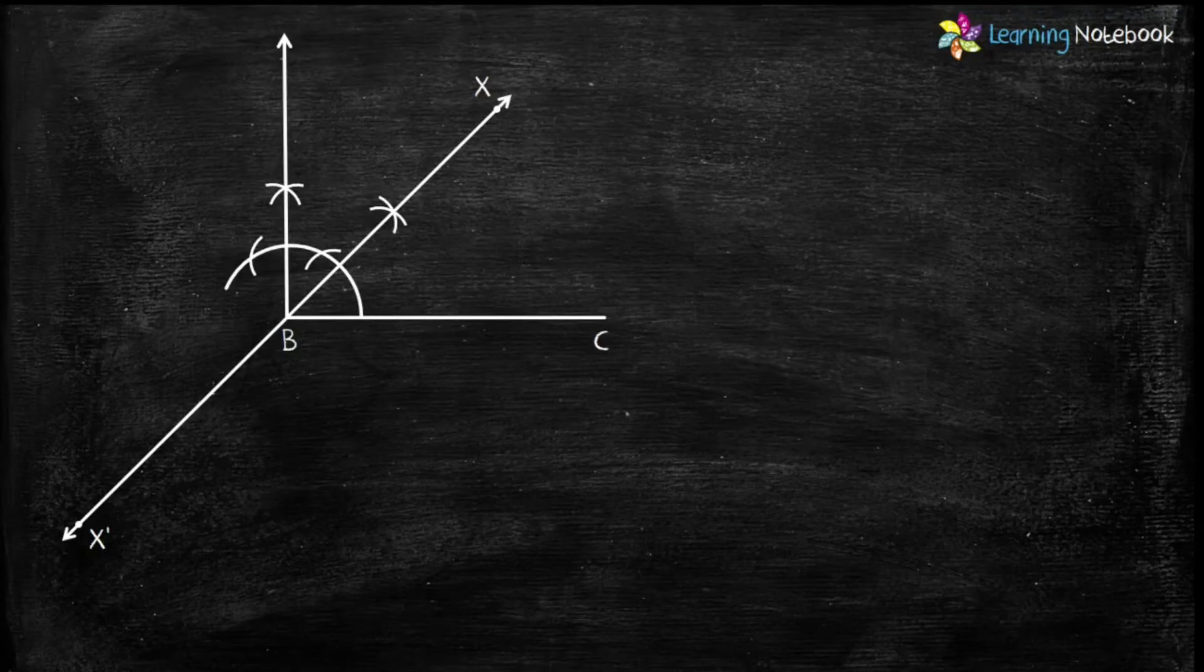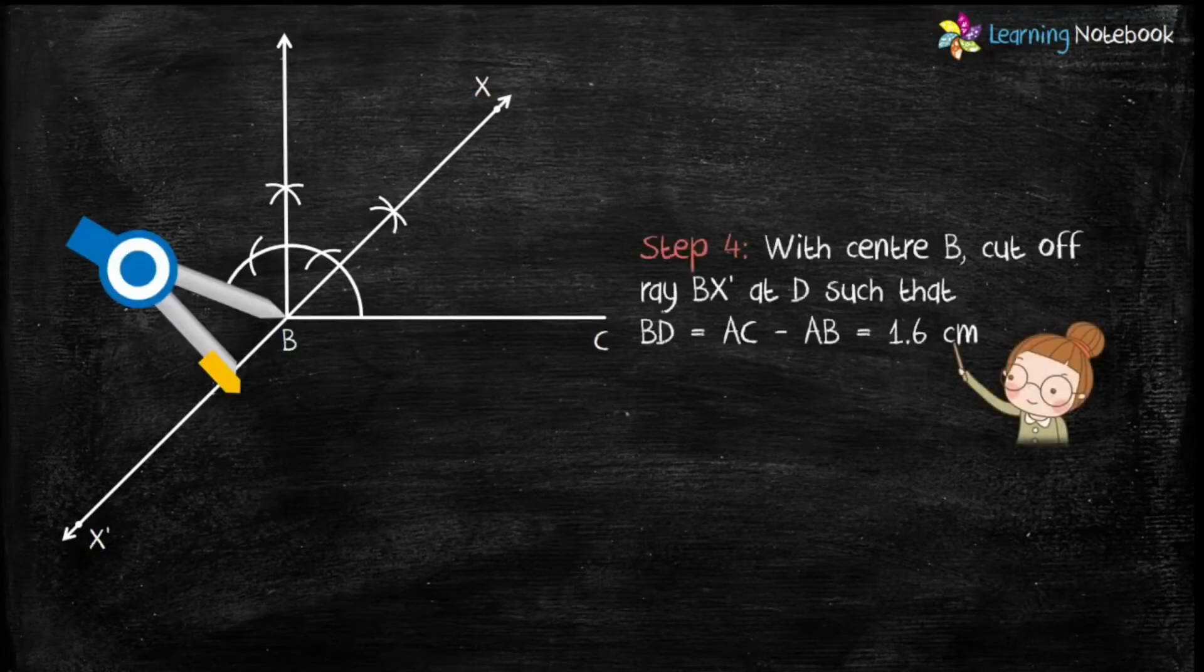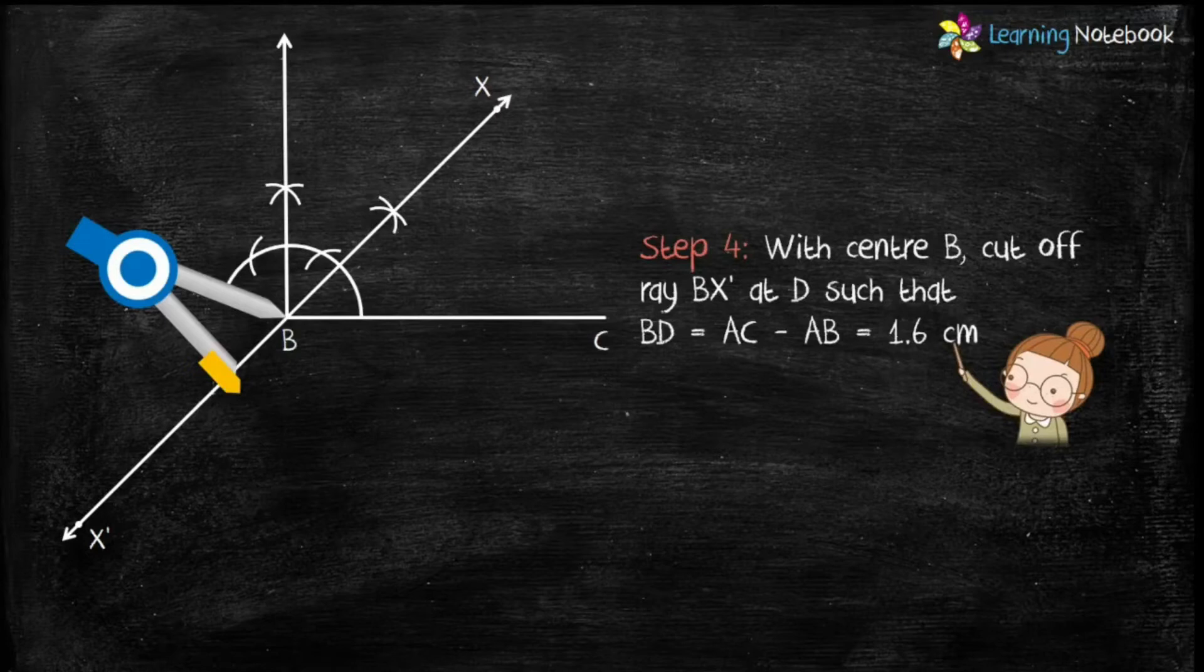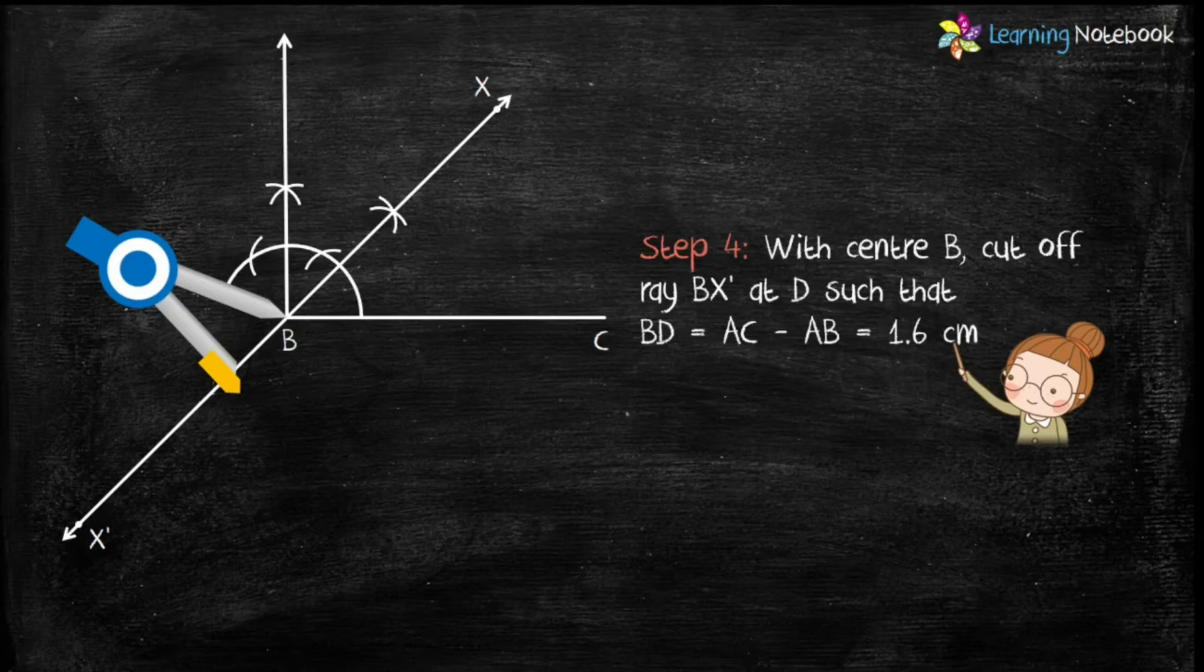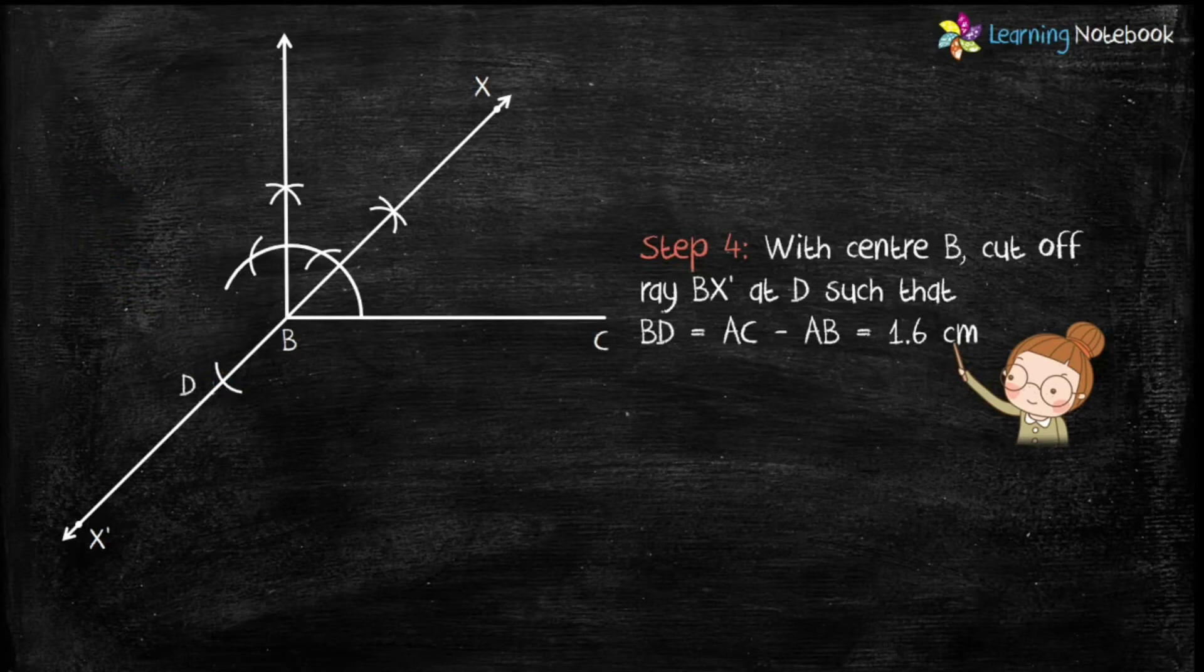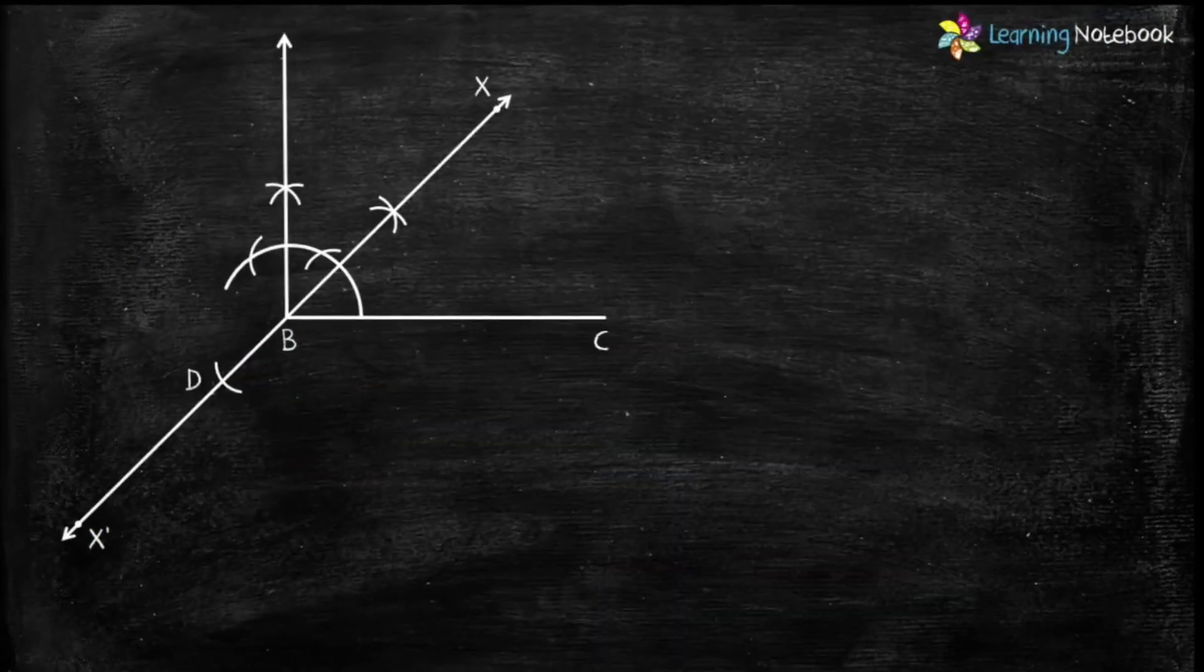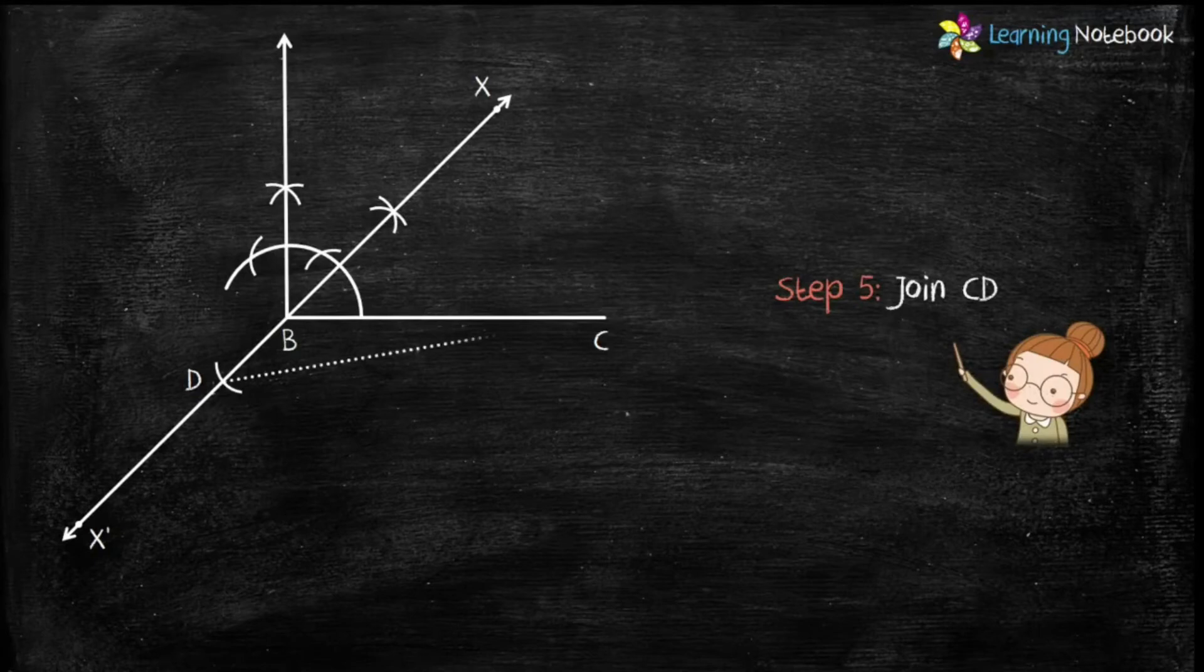Now we are given AC minus AB equals to 1.6 cm. So students take radius of 1.6 cm and with center B cut off ray BX dash at point D. Now join CD.